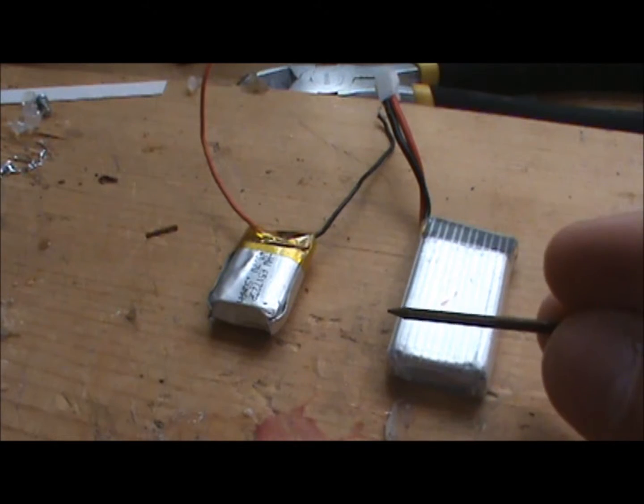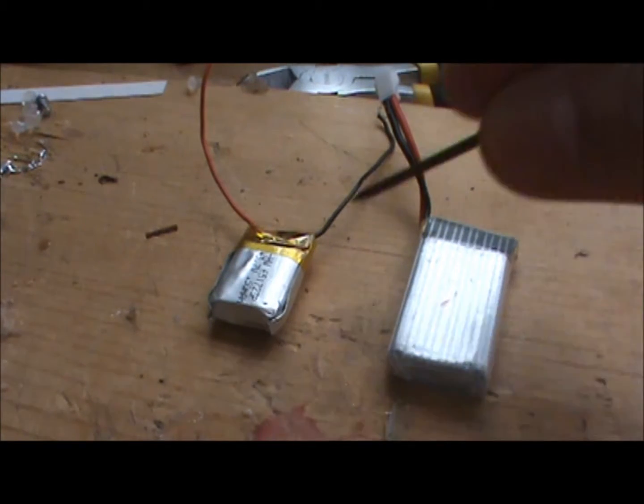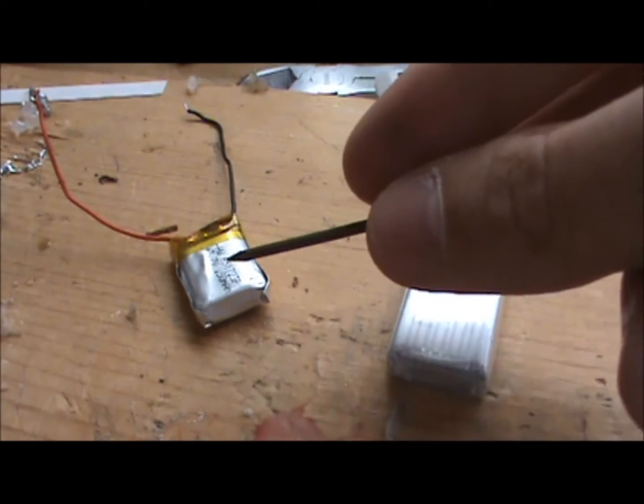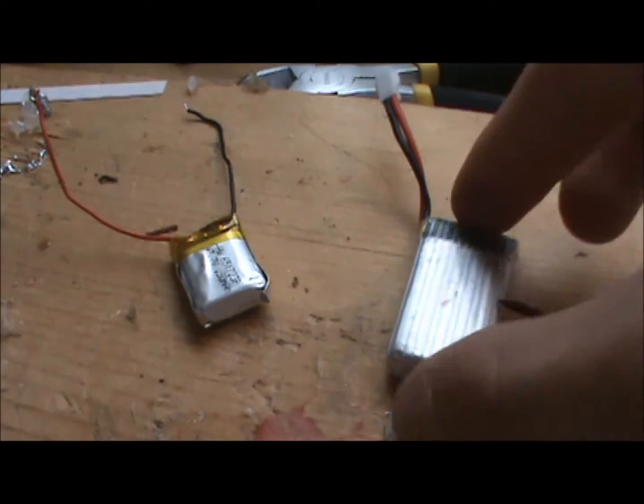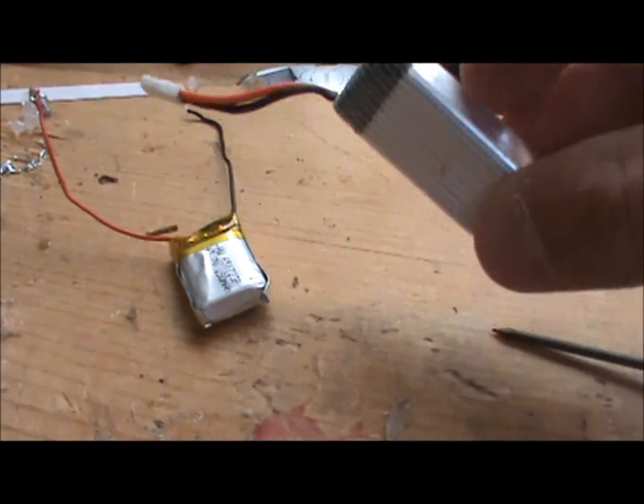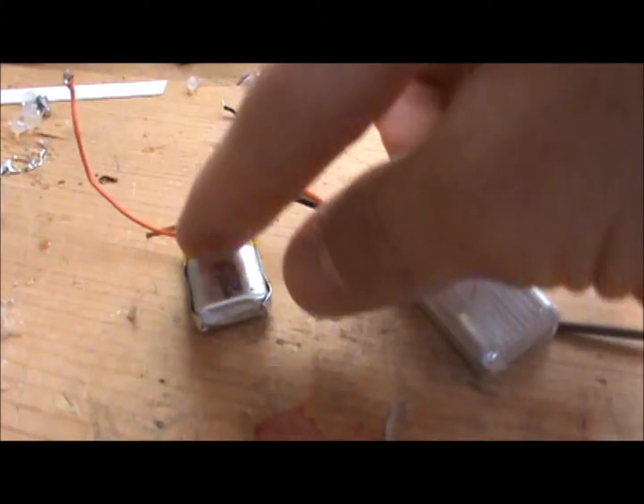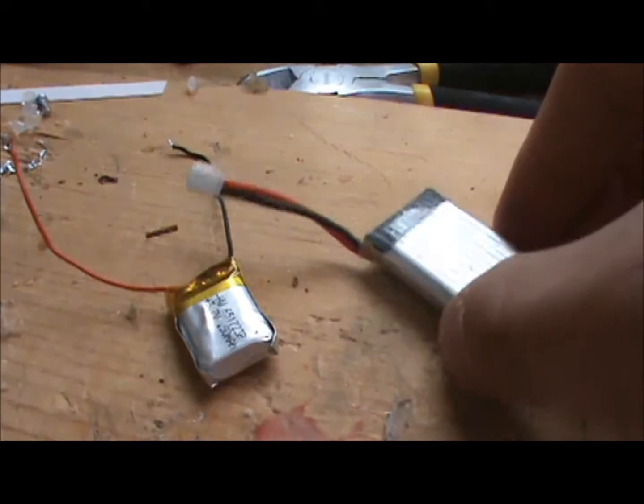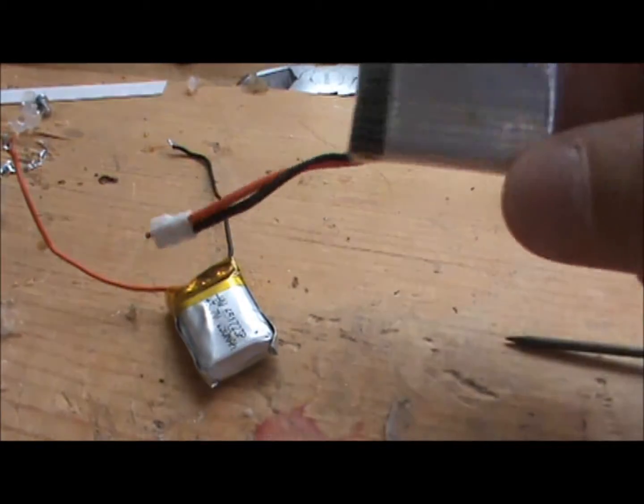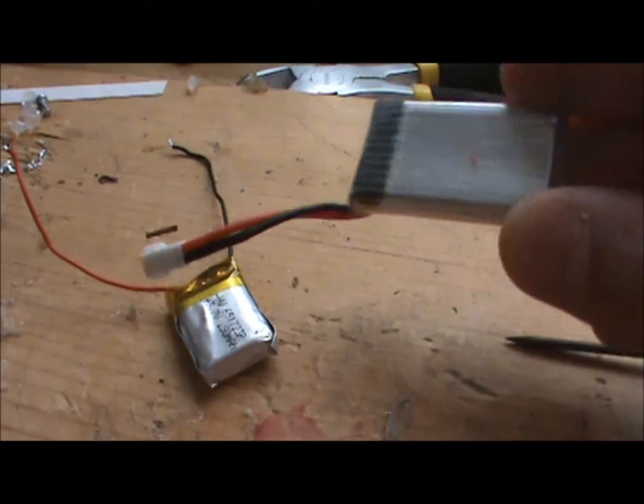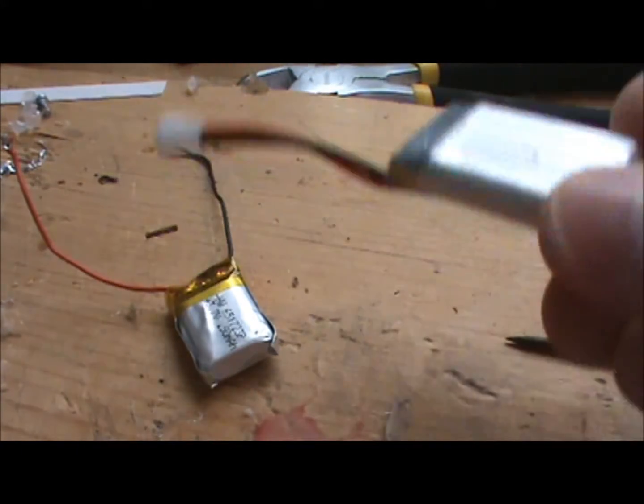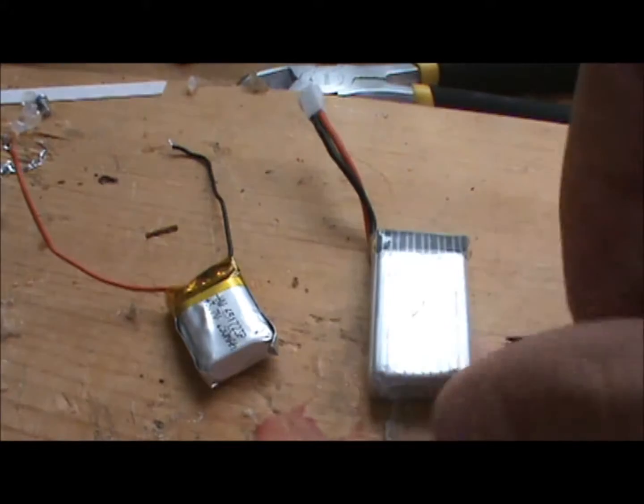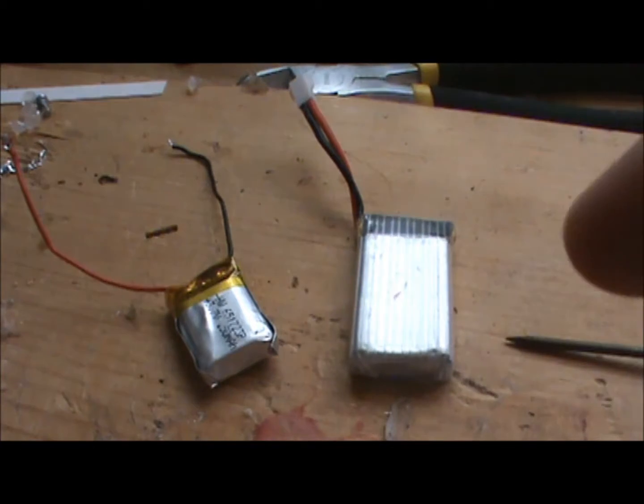So they're both 3.7 volt which is good because that means you can take this from whatever this was connected to and add this to it which is a lot higher. So this was connected to a helicopter and this was connected to my Hubsan X4. And so I connected this one to my helicopter and I'm getting much higher flight times because of the higher milliampage. So I'll show you how to do that.